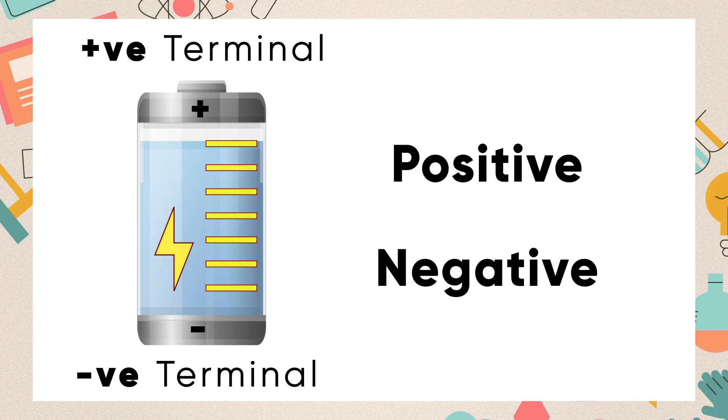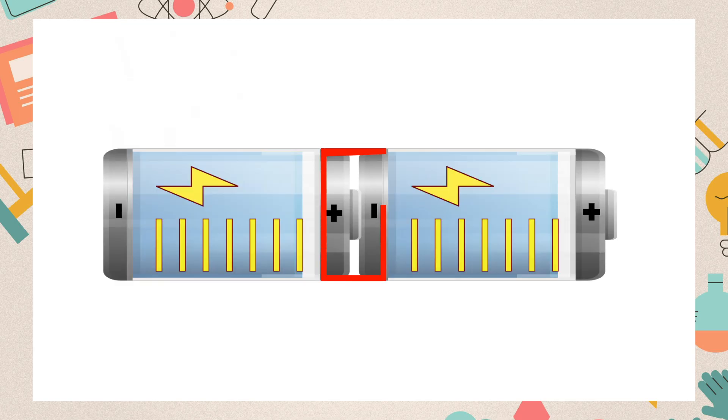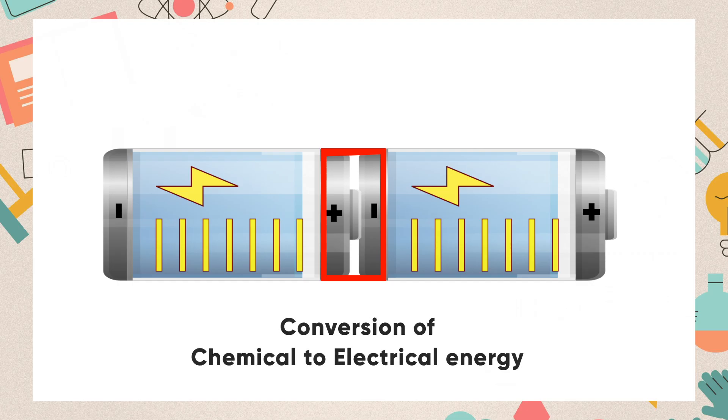When these two terminals are connected by a device, electric current flows through it. The positive terminal is connected to a negative terminal and vice versa for the conversion of chemical to electrical energy.